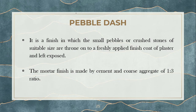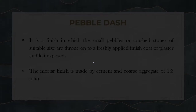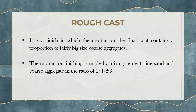We have pebble dash — we use small pebbles or small crushed stones which can be of one color or multiple colors. These small crushed stones are thrown into the final coat of the plaster, and the wall is plastered like this. The proportion is around 1:3, meaning one part of cement to three parts of pebbles. You can see this on some exterior walls.